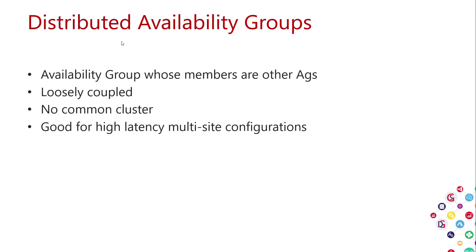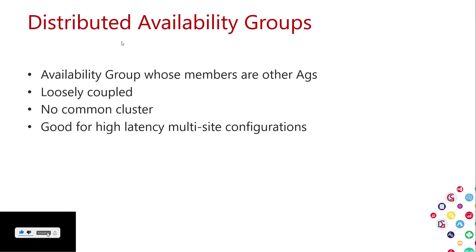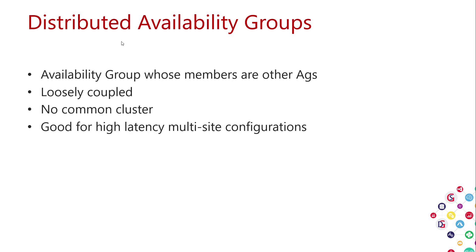For example, a customer running a major online forum had one availability group spanning the North American continent — replicas literally from coast to coast. Even if one site had a complete outage, they had multiple other sites to failover to. The challenge was that this required one Windows Failover Cluster to span that complete wide area network, creating a lot of latency. This could cause false failure detections, and network hiccups on those long links would be seen as failures.